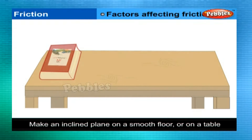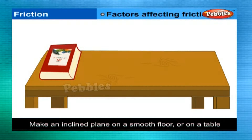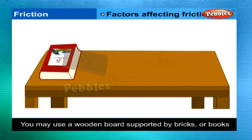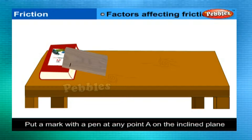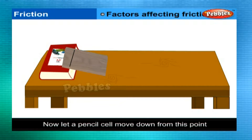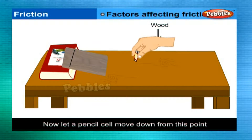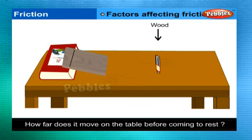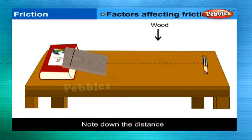Make an inclined plane on a smooth floor or on a table. You may use a wooden board supported by bricks or books. Put a mark with a pen at any point A on the inclined plane. Now, let a pencil cell move down from this point. Note down how far it moves on the table before coming to rest.